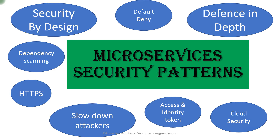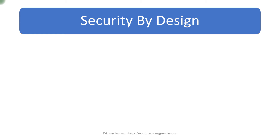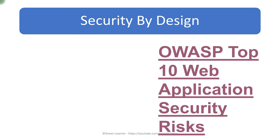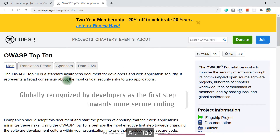The first point is security by design — security starts at the moment of designing your software. Before looking into that, let's see the top 10 web application security risks. OWASP is the organization that works towards securing applications. It maintains and publishes that list regularly, and it also tells us what options we can use to secure our application.